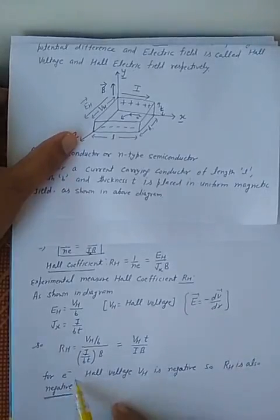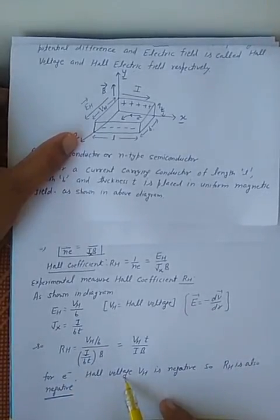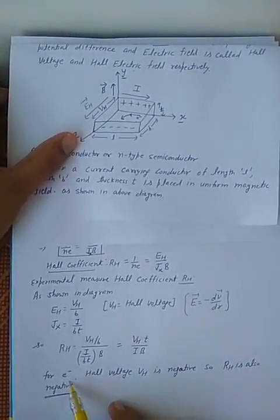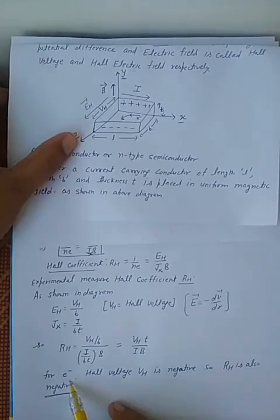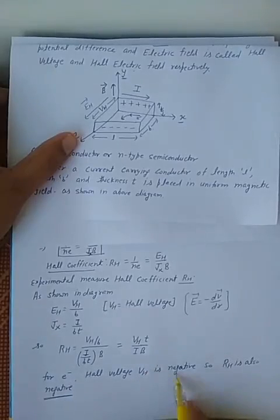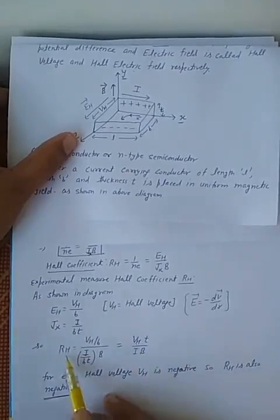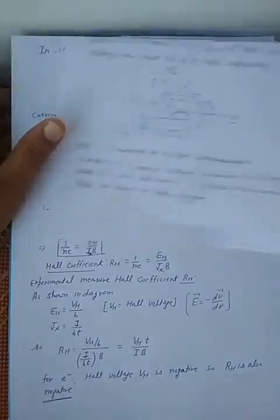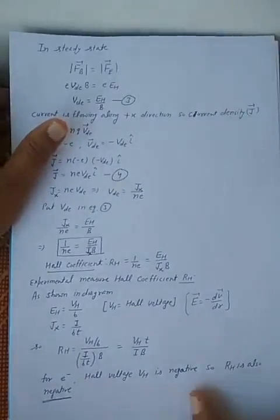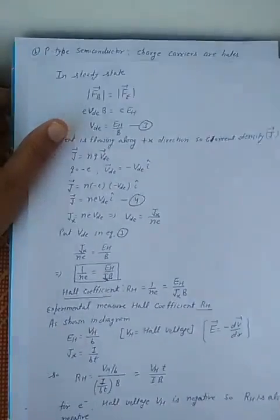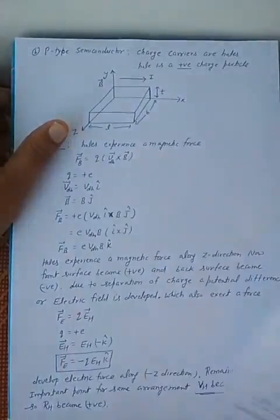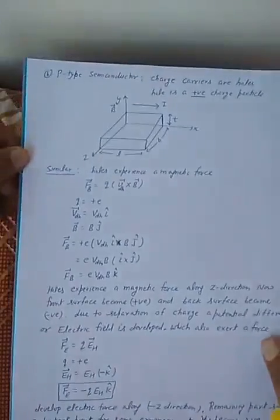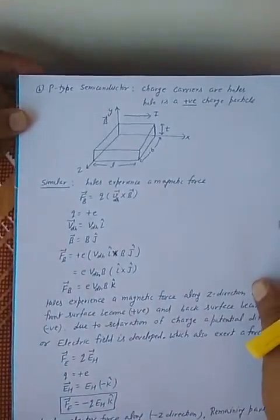For an electron sample — conductor or n-type — V_H is negative. If V_H is negative, then R_H is negative. When the Hall coefficient is negative, it means the charge carriers are electrons, and if the charge carriers are electrons, then the sample is a conductor or n-type semiconductor.